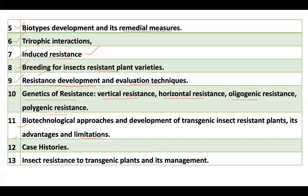A case history to study is Bt cotton in India, which was introduced in 2002. This suppressed the bollworm complex. You also need to study Bt-resistance development in these case studies.